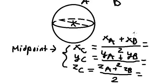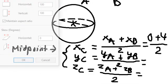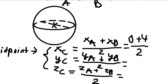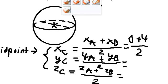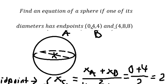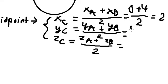So xa is 0, xb is 4, and we calculate to get xc = 2. For yc we have (4 + 8)/2 and we get 6. Similar for the last one, zc = (4 + 8)/2 = 6. So the center is (2, 6, 6).